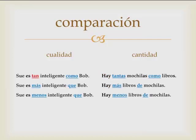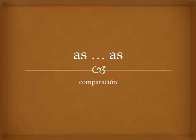Let's wrap up this lesson. Su es tan inteligente como Bob — equal quality comparison. For quality, if you say more than or less than, the second part must be que: más que or menos que. Whereas for quantity, if you want to say more than or less than, you use de: hay más libros de mochilas, hay menos libros de mochilas. Comparison of two things — either equal or unequal in number or quality. Tan como versus tantos como; más y menos que versus más y menos de.